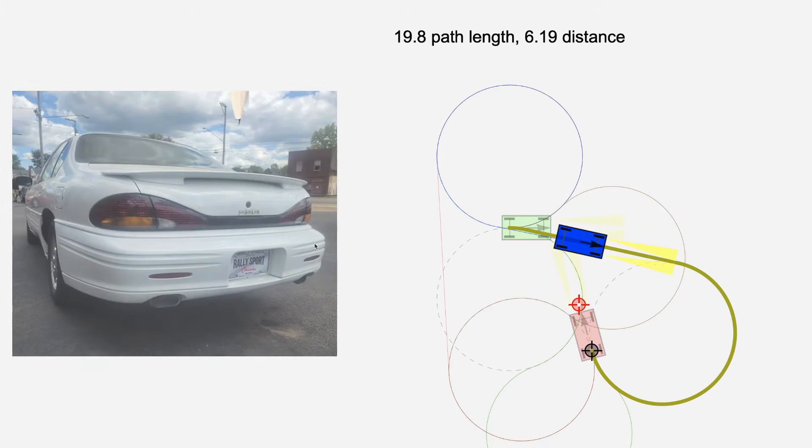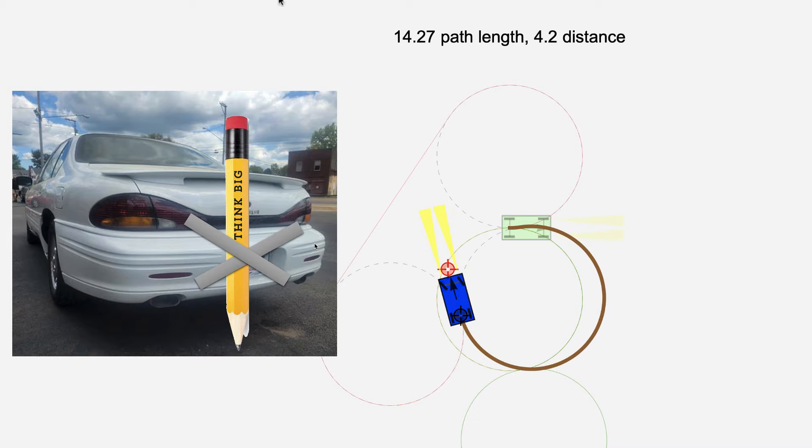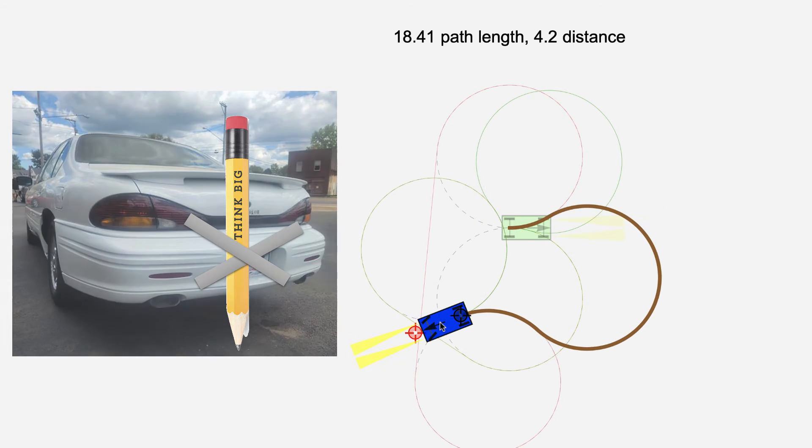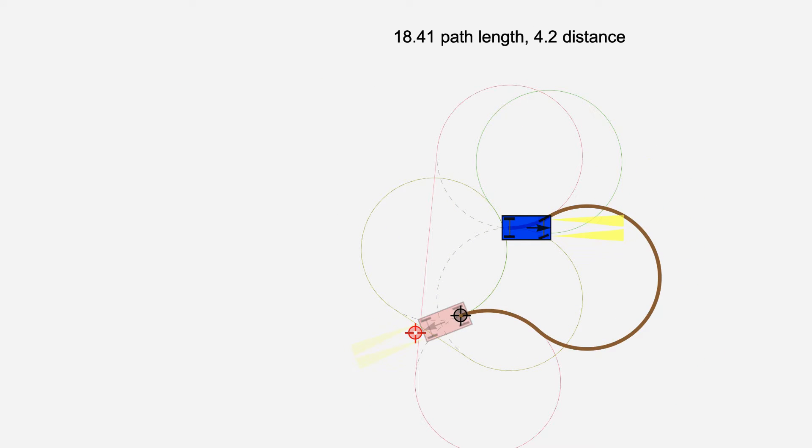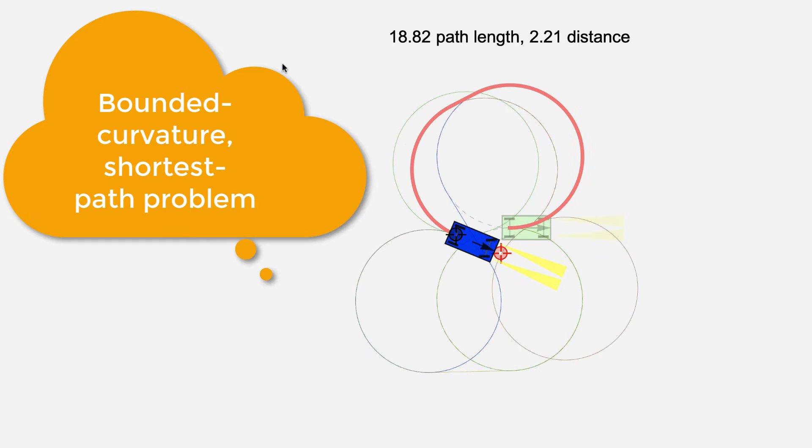Imagine the path traced out by a pencil attached to the center of the rear axle. We want to determine the control inputs that make this path as short as possible. Our goal is to solve the bounded curvature shortest path problem for a car traveling between any given initial configuration and goal configuration.